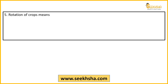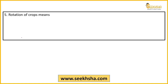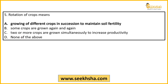Last question: Rotation of crop means — option A: growing of different crops in succession to maintain soil fertility; option B: some crops are grown again and again; option C: two or more crops are grown simultaneously to increase productivity; option D: none of the above.